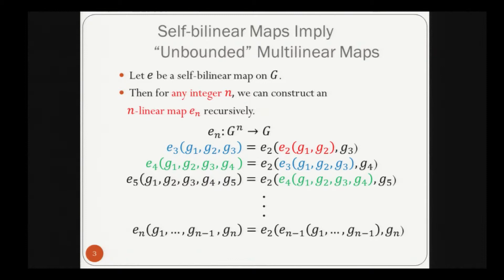Self-bilinear maps imply unbounded multilinear maps, where unbounded means that the level of multilinearity is not bounded in the set-up phase. The construction is very simple: let E be a self-bilinear map on G. Then for any integer N, we can construct an N-linear map E_N. E_2 is the self-bilinear map E itself, E_3 is constructed using E_2, E_4 using E_3, and so on. So if we obtain a self-bilinear map, it will be very useful in cryptography.